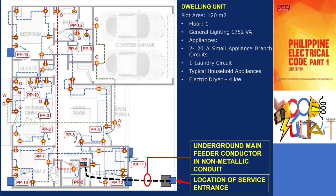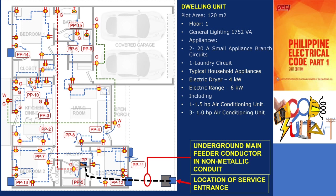Electric clothes dryer: 5,000 volt amperes. Electrical cooking range: 6,000 volt amperes. Split type air conditioning unit: 1.5 horsepower. Room air conditioning units: 3 units at 1.0 horsepower each. Storage water heater: 4.5 kilowatts. Booster pump: 1.5 horsepower. For this project, there is a 20% future expansion to consider.